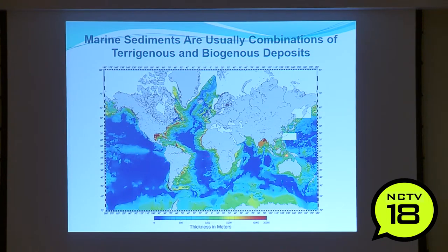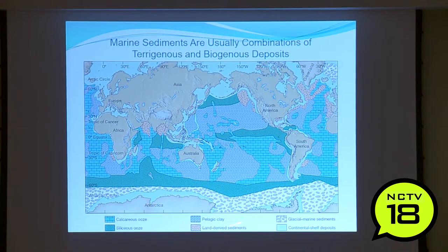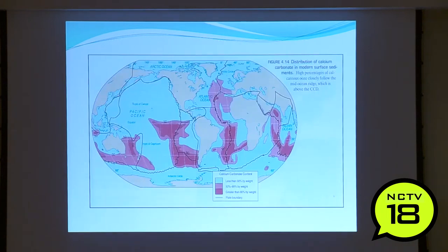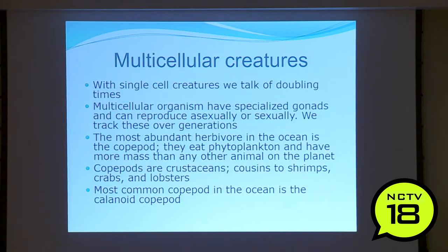Sediment thickness corresponds to areas along the continents and areas of high primary productivity — right along the equator and off major rivers. Research found sediment building at 22 centimeters per year in some areas. A map of sediment types shows which creatures are most predominant. The calcium carbonate compensation depth is the depth below which shells dissolve; above that, along mid-ocean ridges and shallow parts, phytoplankton shells are preserved.